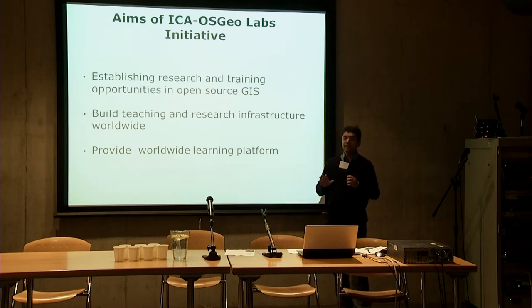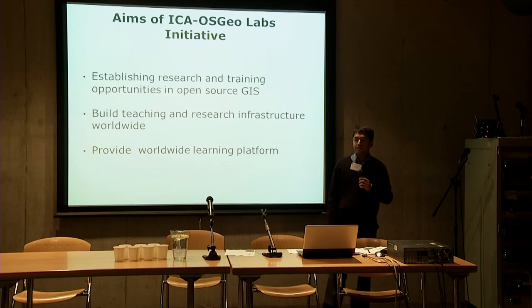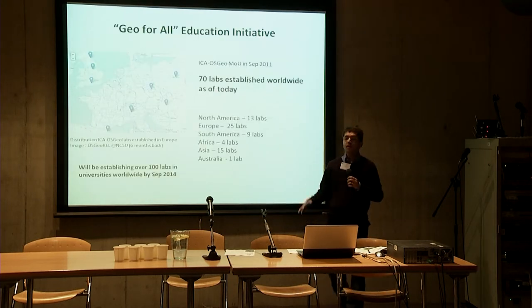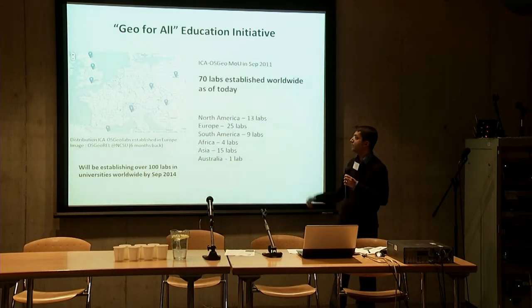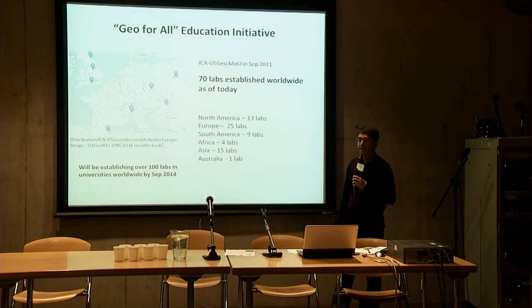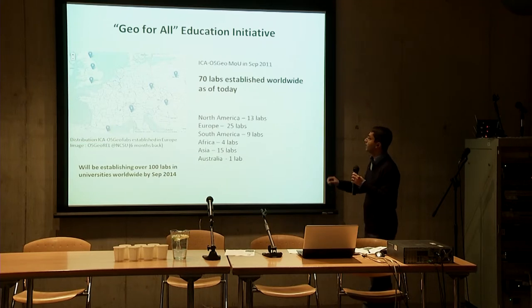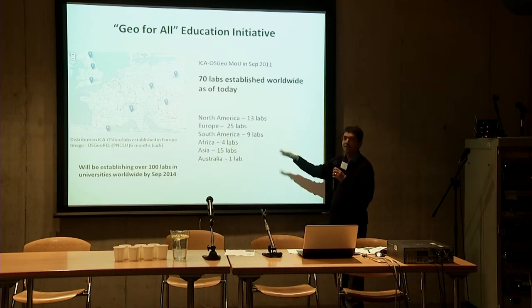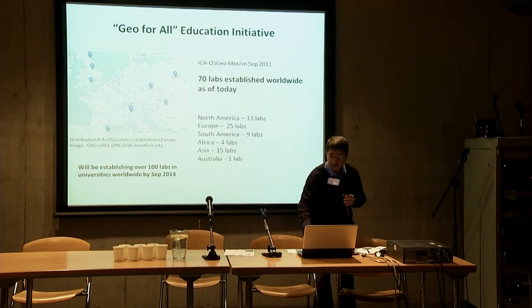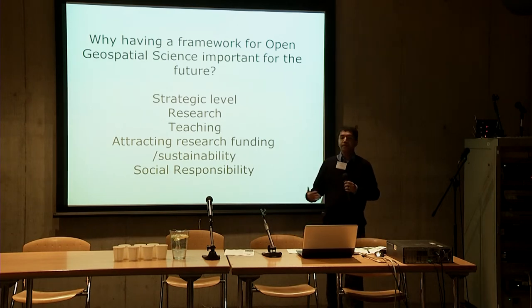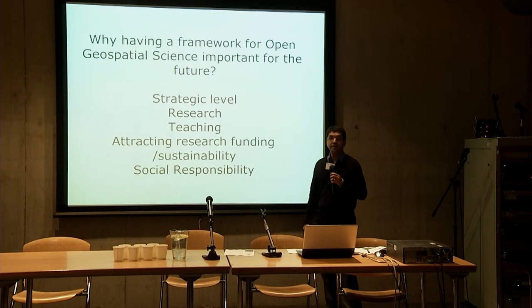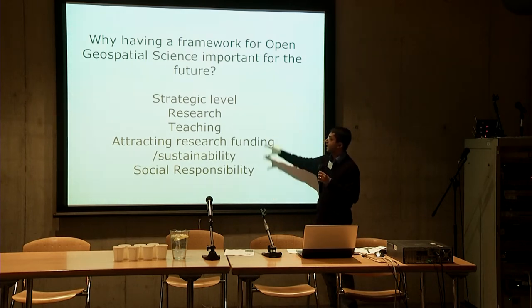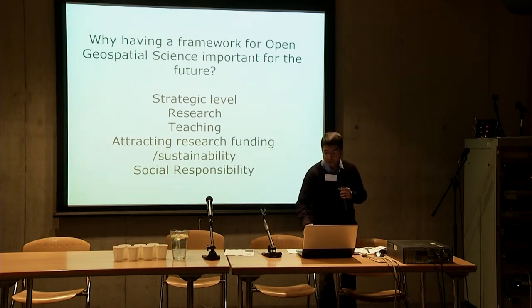When we started this we had three key aims: one was to establish research and training opportunities in Open GIS; the second was to build teaching and research infrastructure worldwide and provide a worldwide learning platform. The stats now — we have 70 labs established as of today. We started with the vision of having five labs in five years, so most of our labs are in Europe and North America, but we are hoping to have more labs in Africa and Asia as well. More and more universities in Europe are establishing Open Source Geospatial Labs so that they can teach students, for reasons ranging from strategic and research level to teaching and long-term sustainability, attracting research funding and social sponsors. Open GIS is key for innovation.